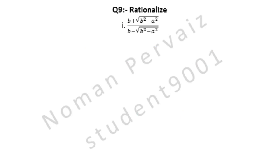Question number 9 is: rationalize. Part 1 is: B plus under root B squared minus A squared, whole divided by B minus under root B squared minus A squared.